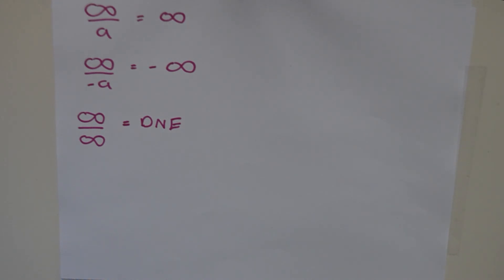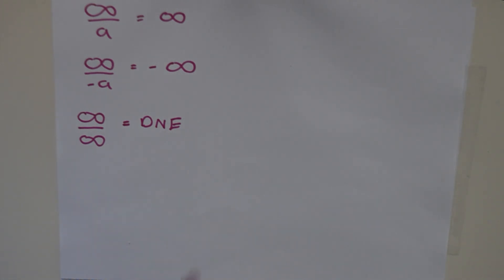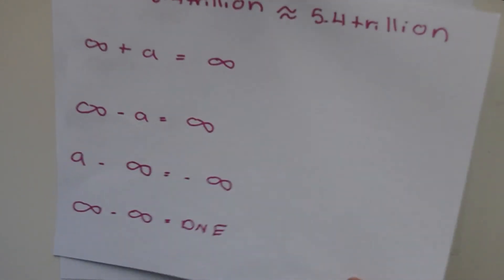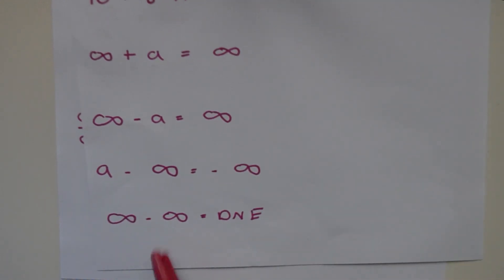To recap: infinity is such a large number that adding, subtracting, or multiplying another number to it doesn't really change anything. But remember the two indeterminate forms that do not exist: infinity over infinity, and infinity minus infinity. Everything else leads to either positive infinity or negative infinity, depending on the signs.